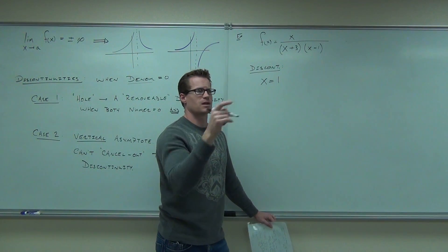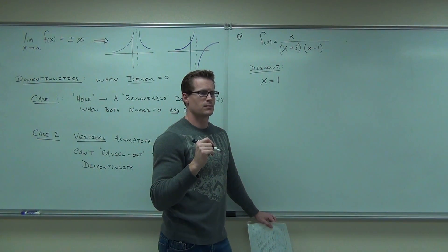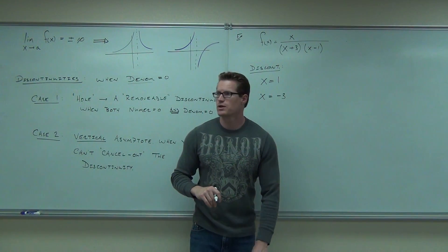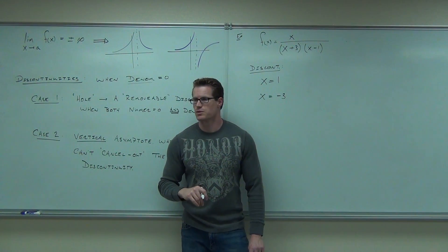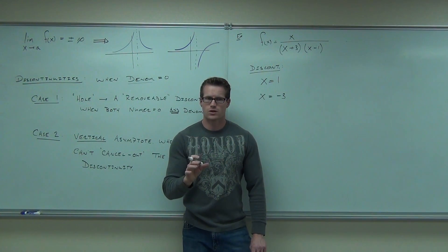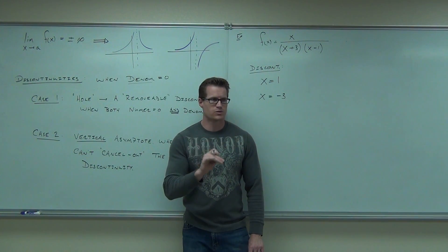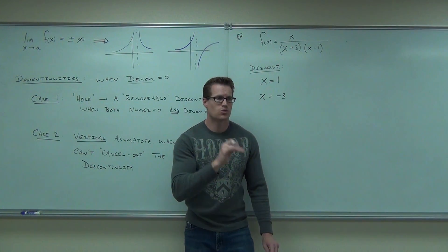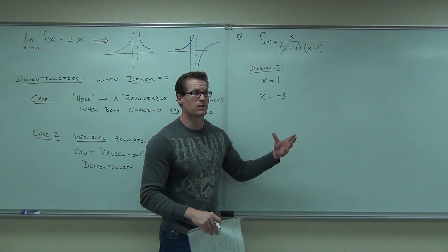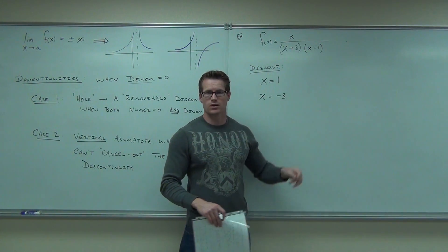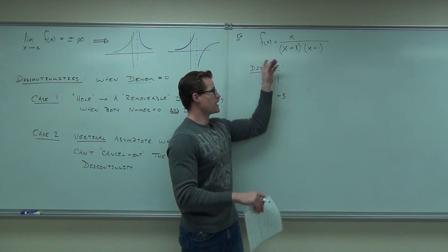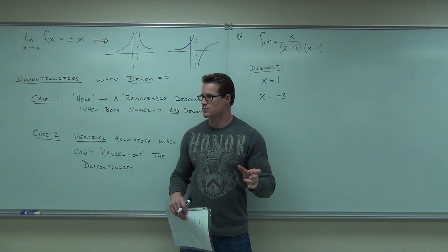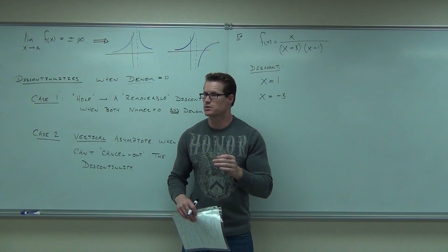Give me another one. Someone on the left-hand side of the room. What do we have? Negative three would be another one. Sure. Now, let me ask you a question about X equals one, X equals negative three. Are they holes? Are they asymptotes? Is one a hole? Is one an asymptote? What do you think? And the answer to the question is, can you cross out where the discontinuity happens? So, basically, can you cross out the X minus one? Can you cross out the X plus three? So, are those holes or asymptotes? Those are both asymptotes. Both of them.